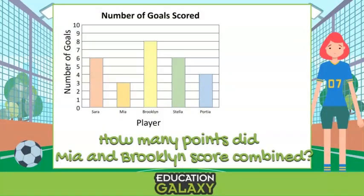Let's check out this bar graph. Look at the title — it says the number of goals scored. Each bar represents a different player on the soccer team, and the numbers on the left represent the scale for the number of goals each player has scored.